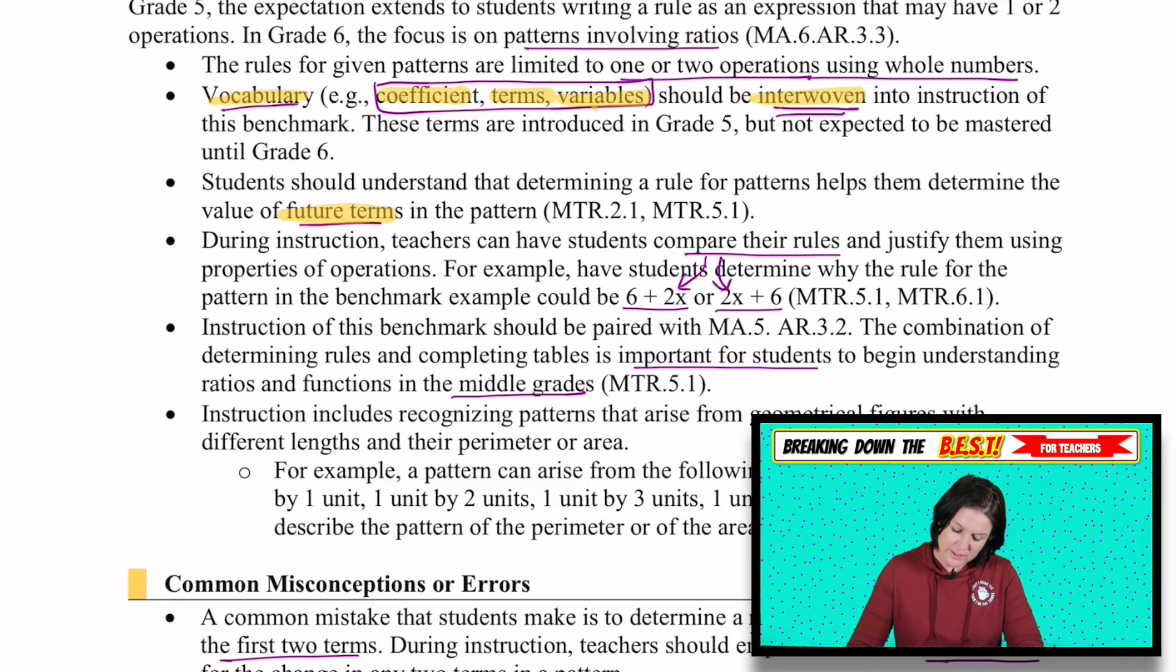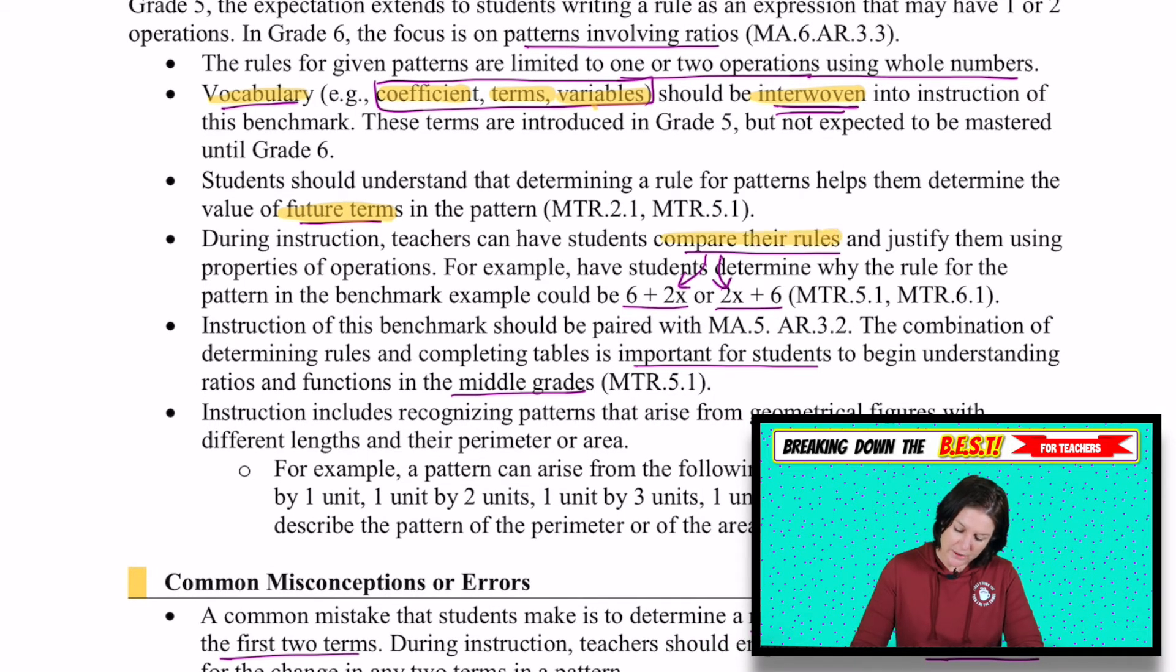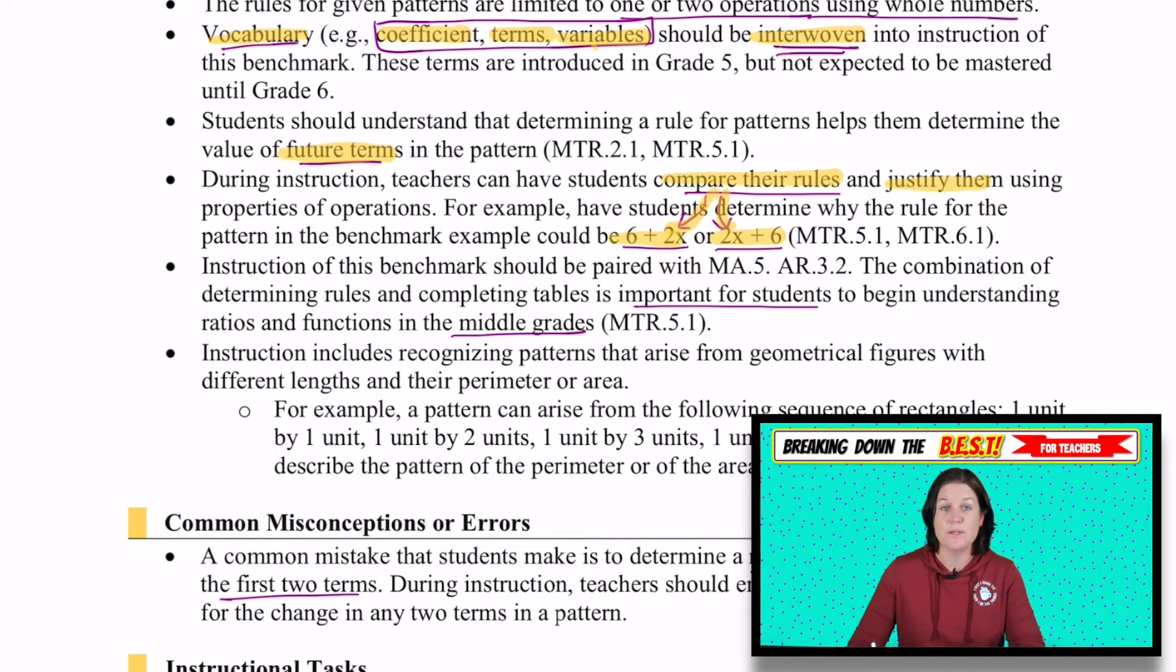It says during instruction, teachers can have students compare their rules and justify them. So for example, a student might create this expression where another one might create this expression. And in this case, we have a property of addition here that just states it doesn't matter the order of your addends, the value will be the same. So both students in this case would be correct.